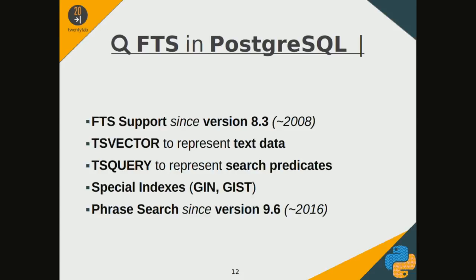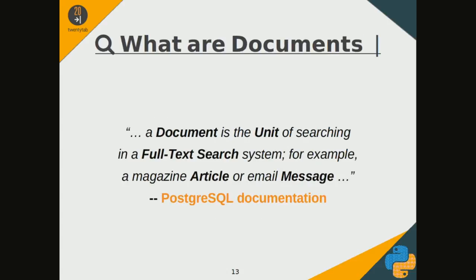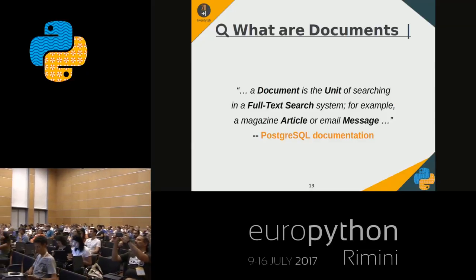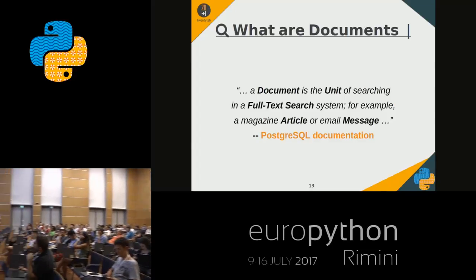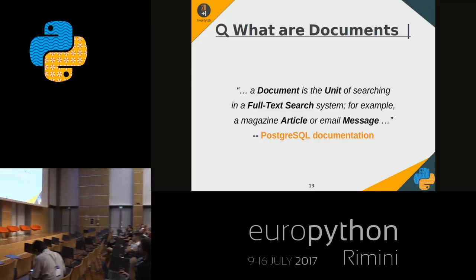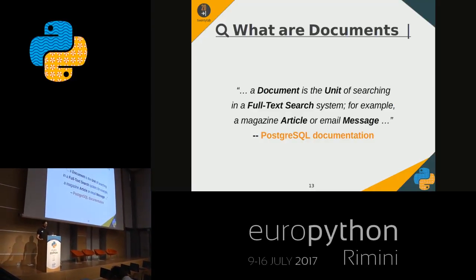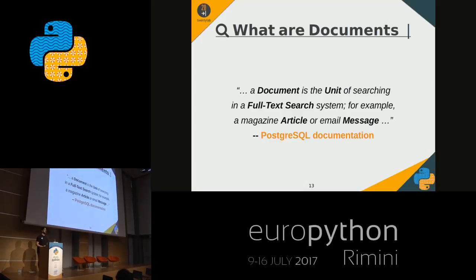Postgres added support for phrase searching in 2016. Before we define full-text search using the concept of a document. The document is the general concept used in full-text search where the search is done. In a database, a document can be a field on a table, the aggregation of multiple fields on a table, or fields in different tables.